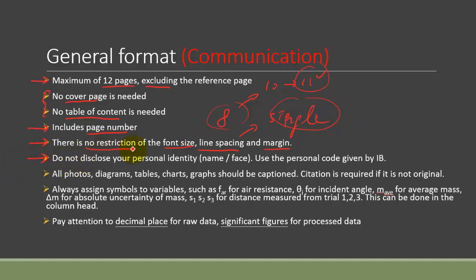Next, this is not something about your scoring but something you just have to pay attention to, otherwise you may just be disqualified. Do not disclose your personal identity including your name and even your face. This is related to how the IB marking is done because they don't want the marker to somehow accidentally know who you are and maybe they just personally know you and give you high marks. Just pay attention to that—just use the personal code given by the IB.